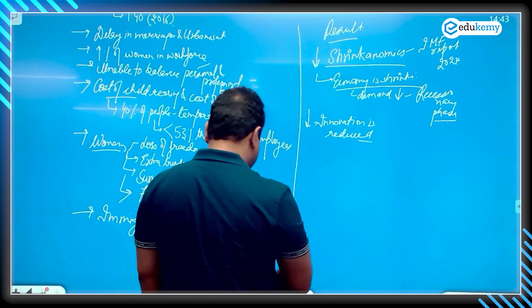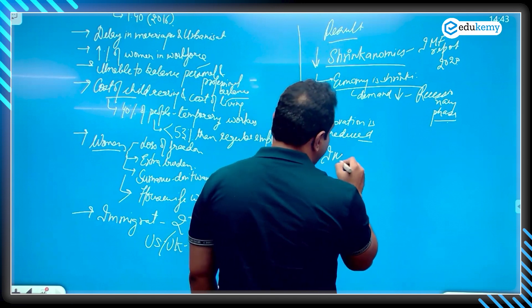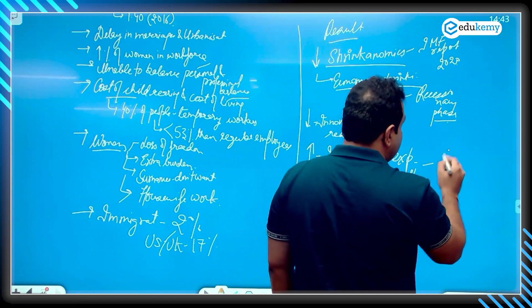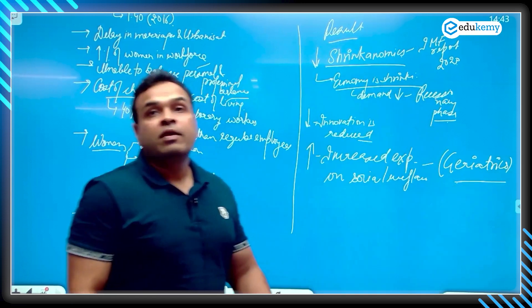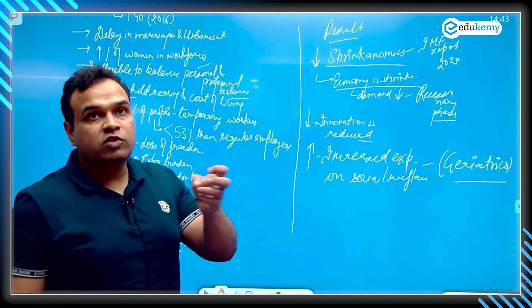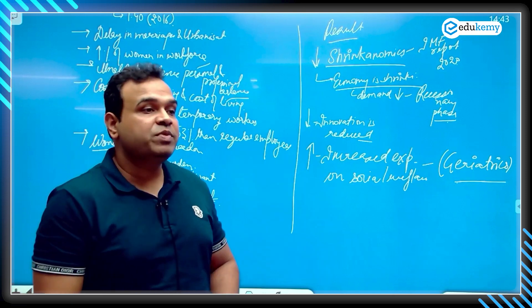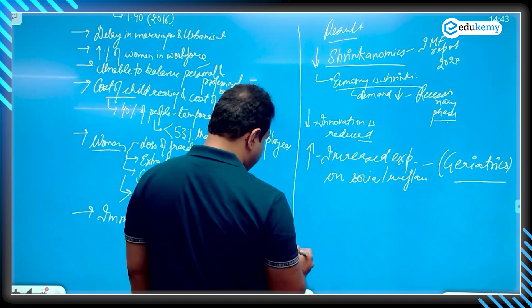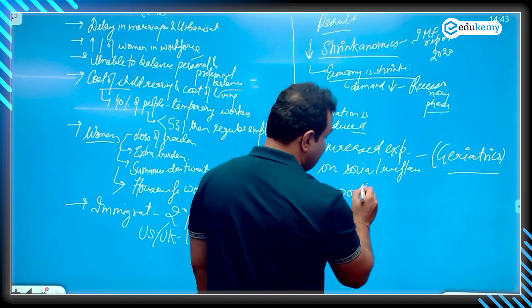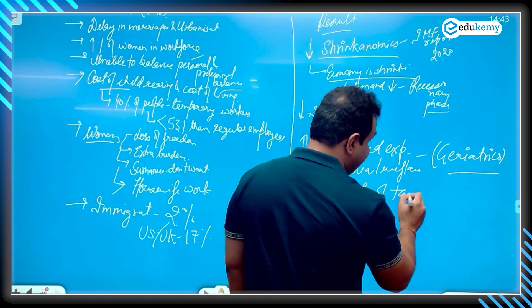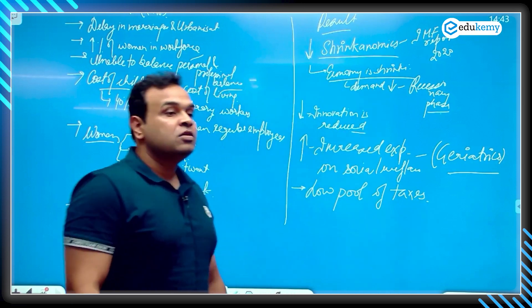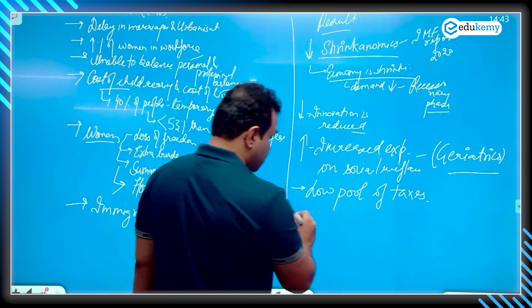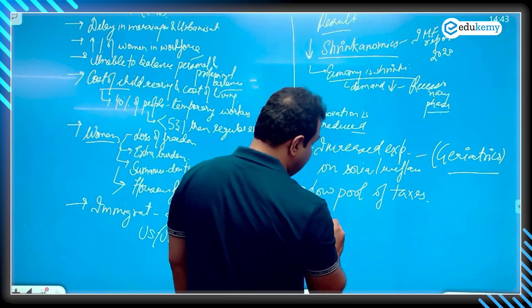Another is increasing expenditure on social welfare and health. Geriatrics is the word that is used, medical care is being given more priority. There will be low pool of taxes and most of the population is aged and dependent.